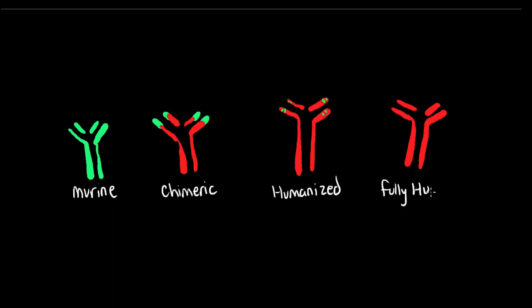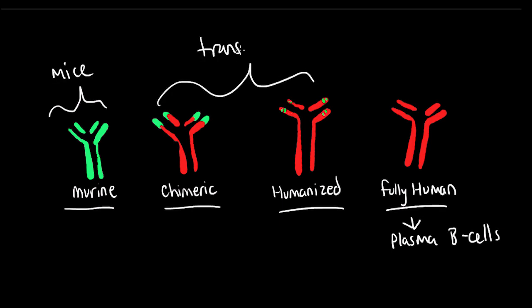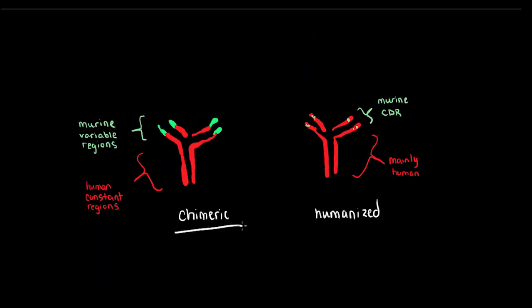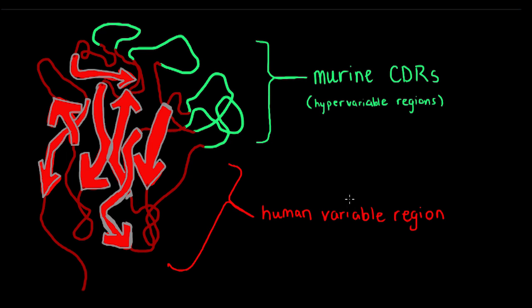Recalling from the last video on monoclonal antibody production, there are four types of MABs: murine, chimeric, humanized, and fully human, which are MABs derived from human plasma B cells rather than mouse B cells. Murine MABs are derived from mice. Chimeric and humanized are both derived from transgenic mice. Chimeric MABs have murine variable regions and human constant regions, while humanized MABs are mostly human except the complementarity-determining regions, or CDR, also known as hypervariable regions. These CDRs are murine-derived.